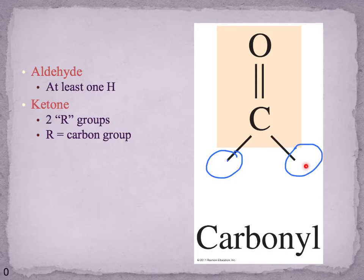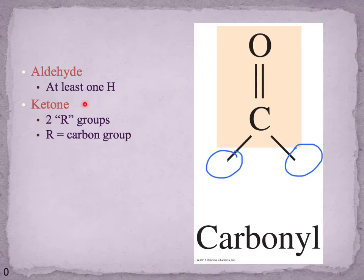The carbonyl group itself is not actually a functional group — it's a structural feature, and it is part of other functional groups. Depending on where it is, the functional group is either an aldehyde or a ketone. We also see carbonyl groups in carboxylic acids. So carbonyl is just a structural feature; the aldehyde or ketone is the actual functional group.